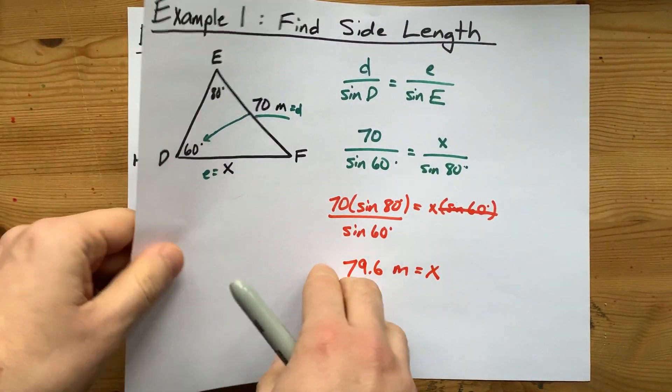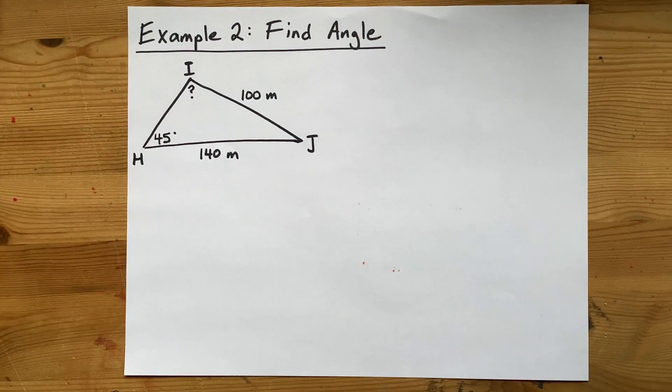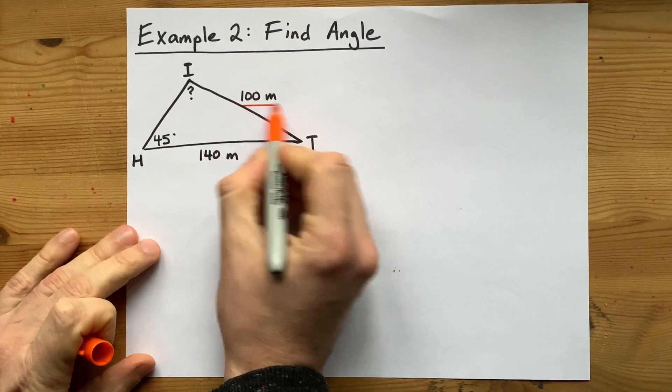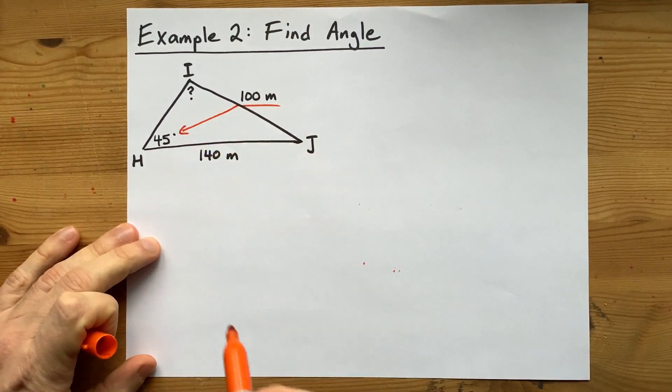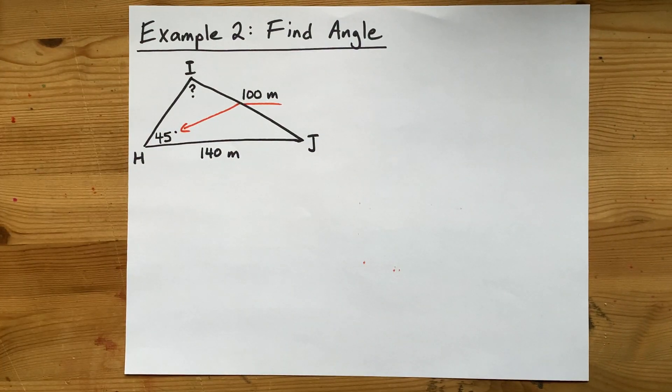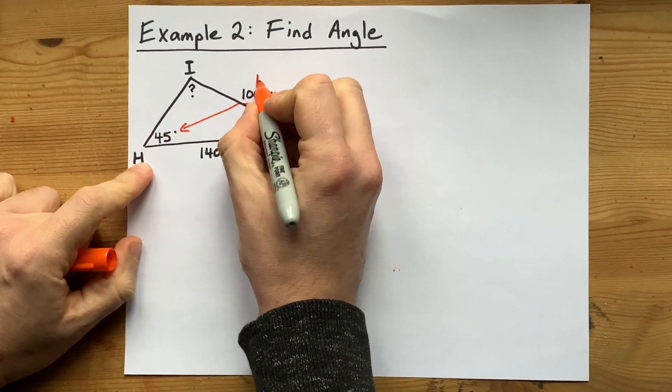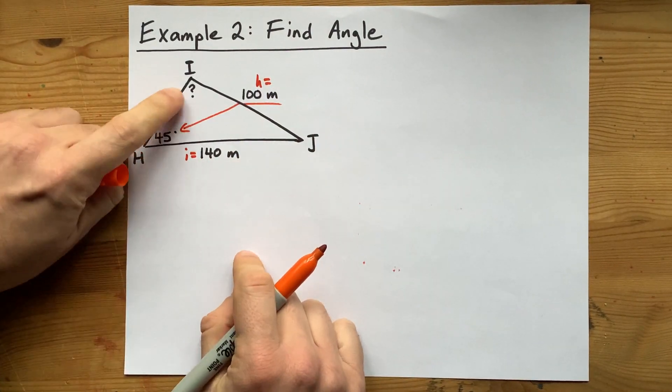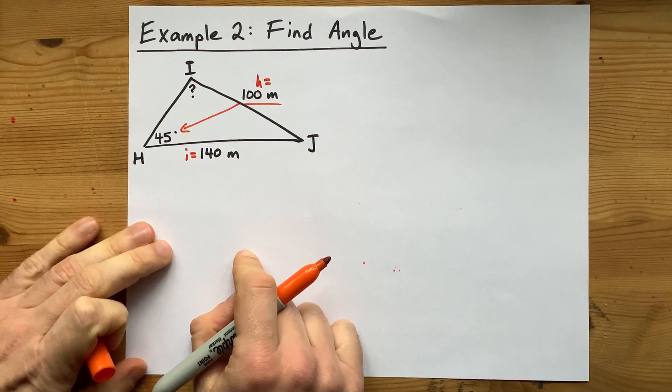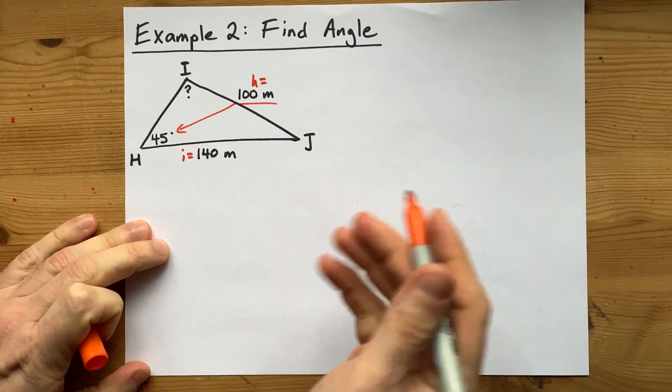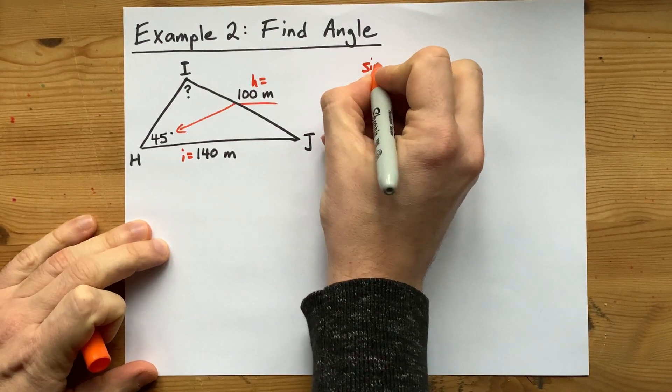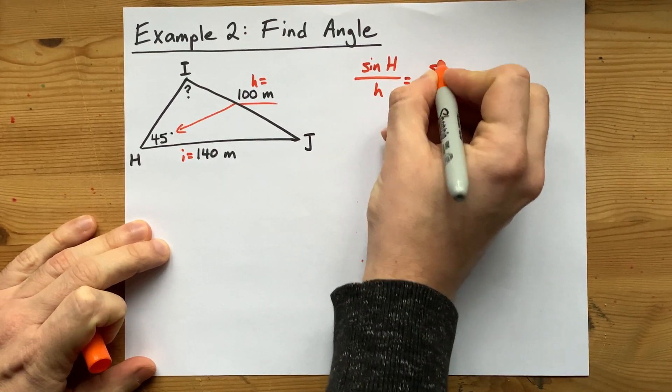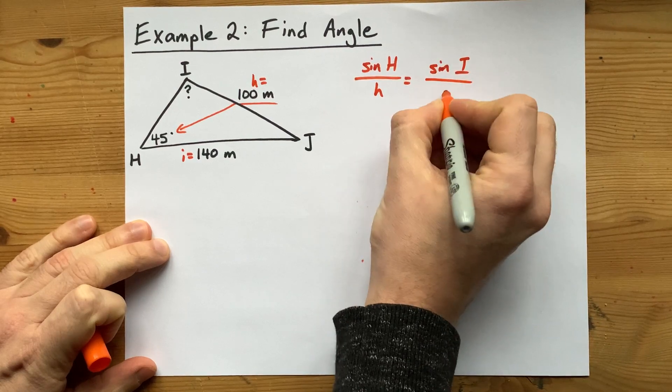Now let's do this one more time but solving for an angle. Again, I can use sine law because I'm given a side and the angle across from it. That's a pair. Here I have capital H and little h known. I know what little i is but I don't know what the angle capital I is. Because I'm solving for an angle, I'm going to put the sins on top. Sin capital H over little h equals sin capital I over little i.